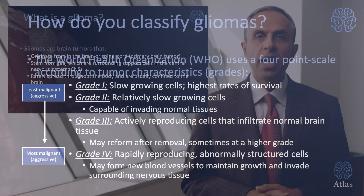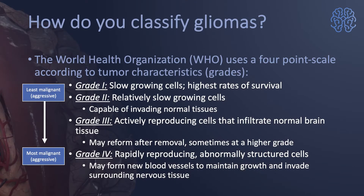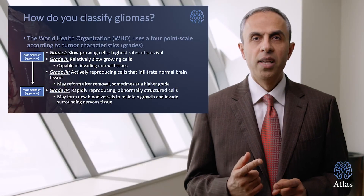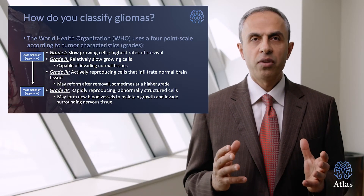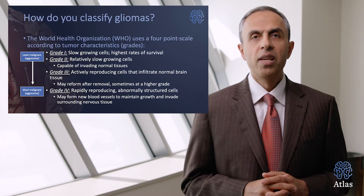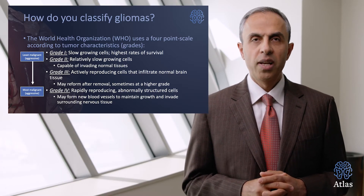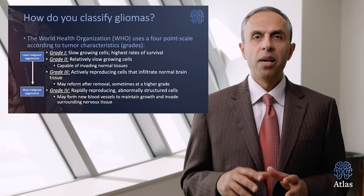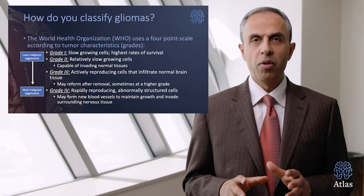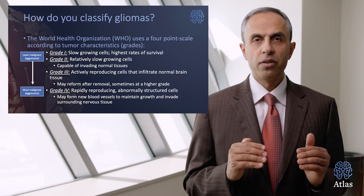How do we classify gliomas? Based on the World Health Organization (WHO), there are four primary classifications. Grade 1 tumors are slow-growing cells with the highest rates of survival. Grade 2 tumors are relatively slow-growing and capable of invading normal brain tissue, but they are not considered cancers.